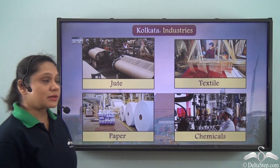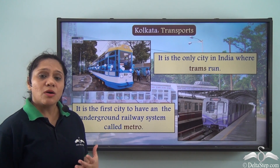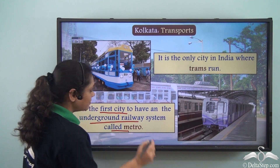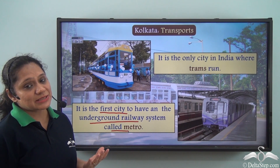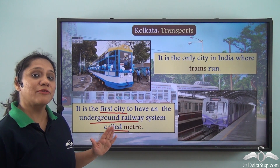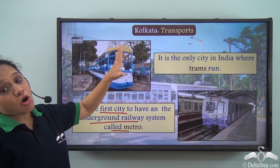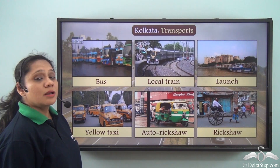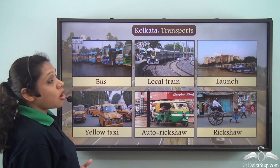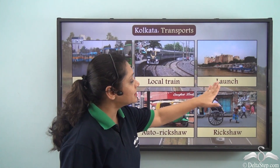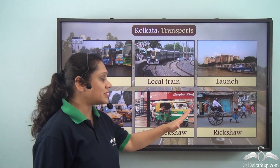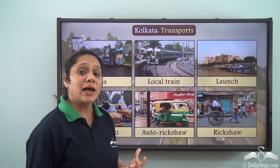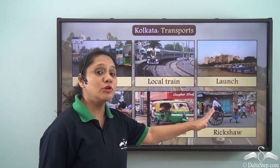Kolkata is the first city in India to have an underground railway system called the Metro. You will find Metro in various cities today, but Kolkata was the first. Kolkata is also the only city where trams still run. Other modes of transport used by Kolkatans include buses, local trains, launches, yellow taxis, auto rickshaws, and rickshaws — both cycle rickshaws and hand-pulled rickshaws. Kolkata is one of the very few cities where hand-pulled rickshaws are still in use.